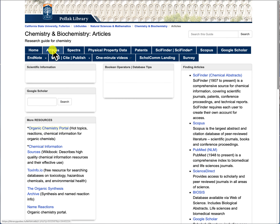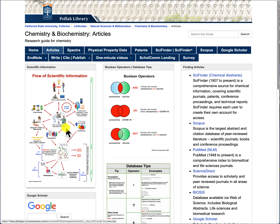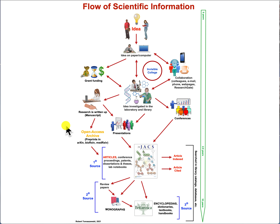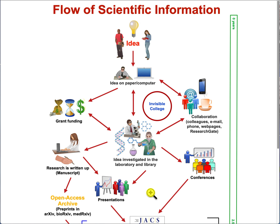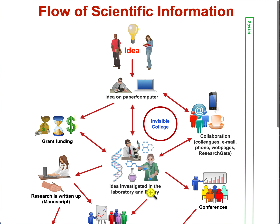Click on the articles tab and click on the flow of scientific information. This diagram gives you some information about information moving from idea to publication. Now the first thing most researchers do when they have an idea is to jot it down somewhere or add it on their computer.